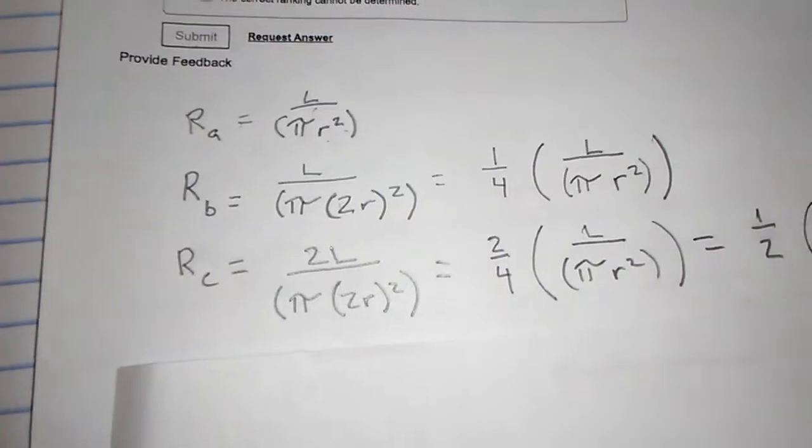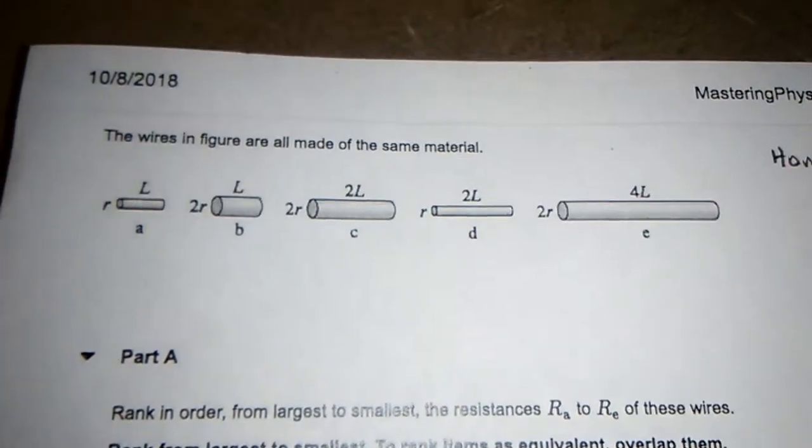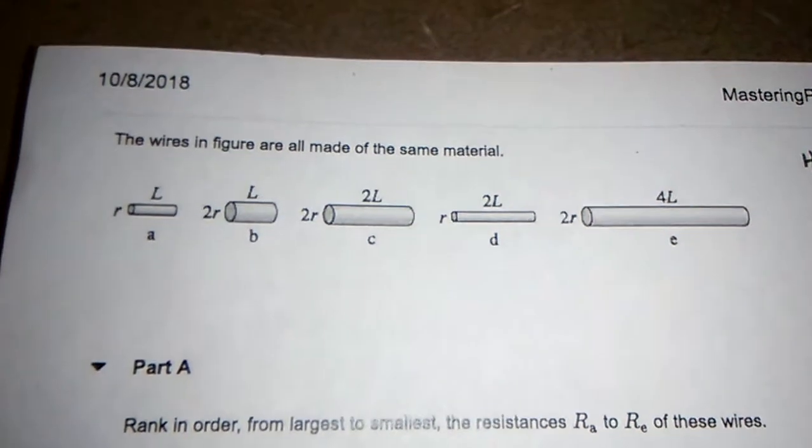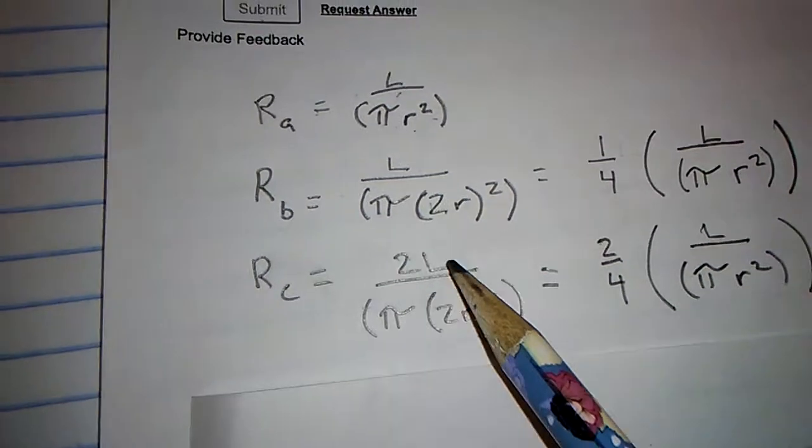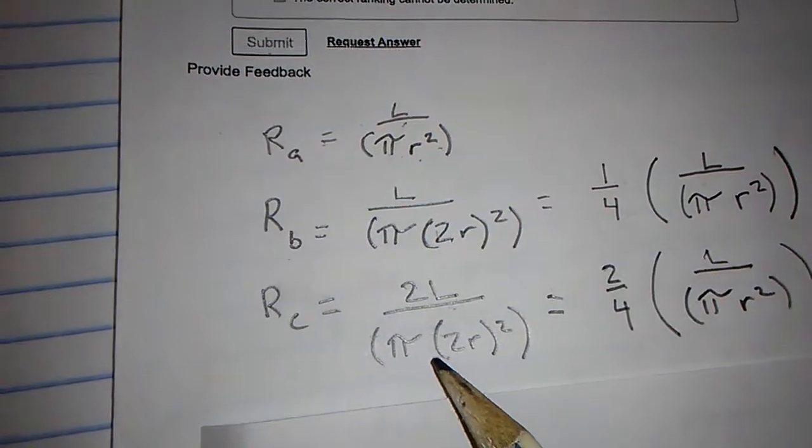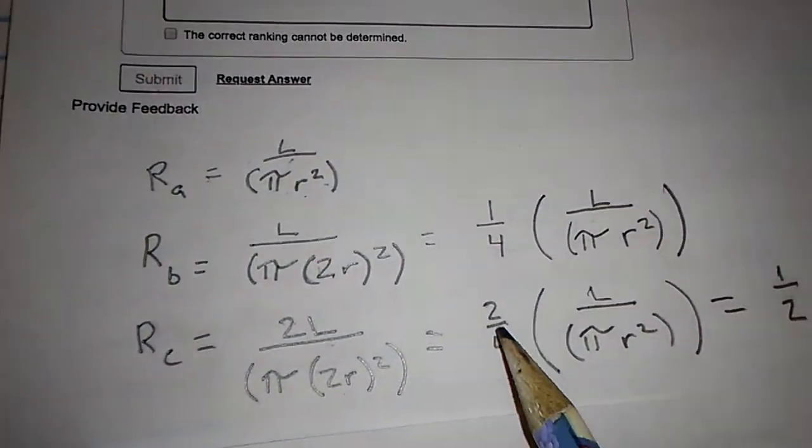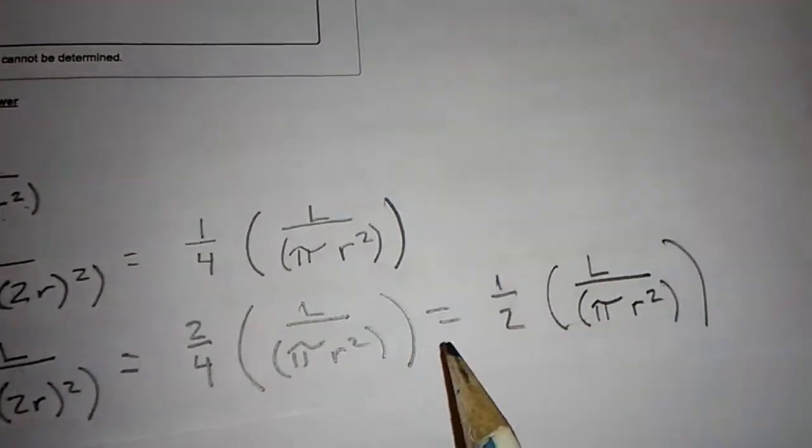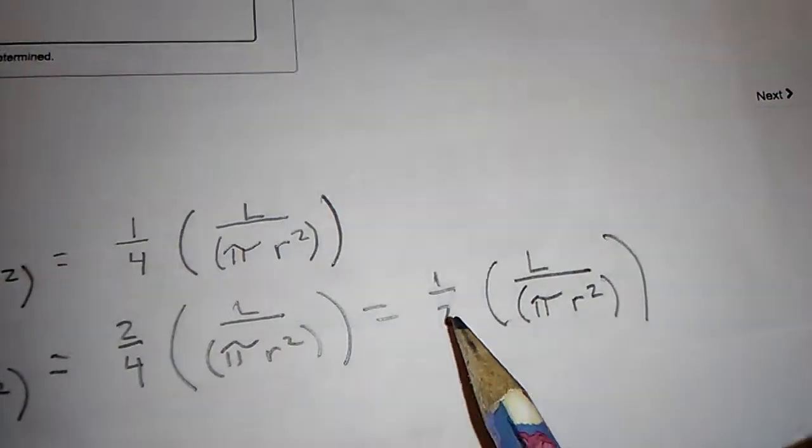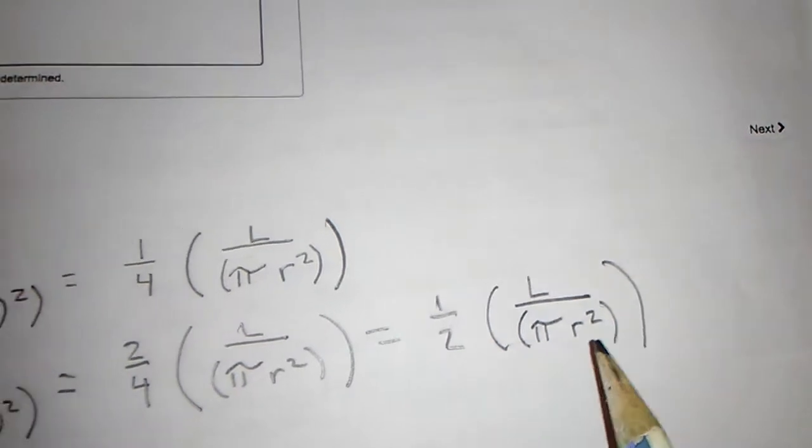And C. C has a radius of two and a length of two. So the length over pi R squared.